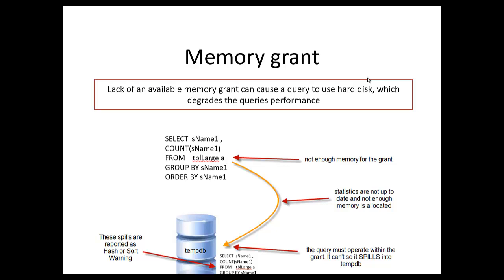So we've got our query here, and we've got a GROUP BY and an ORDER BY. The query in question is going to request a grant — a little piece of memory to be reserved before it executes. In this first example, there's not enough memory for the grant. Why? Because for this example, the statistics aren't up to date — though there are other reasons. So not enough memory is allocated, and when not enough memory is allocated, we can see the spill — our query spills into tempdb.